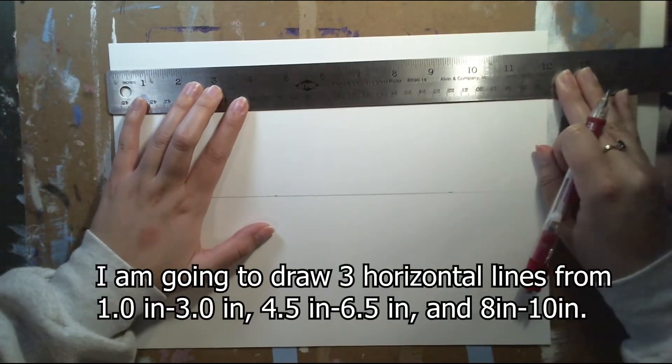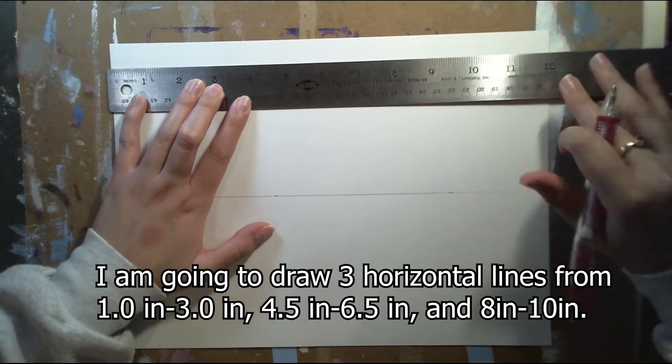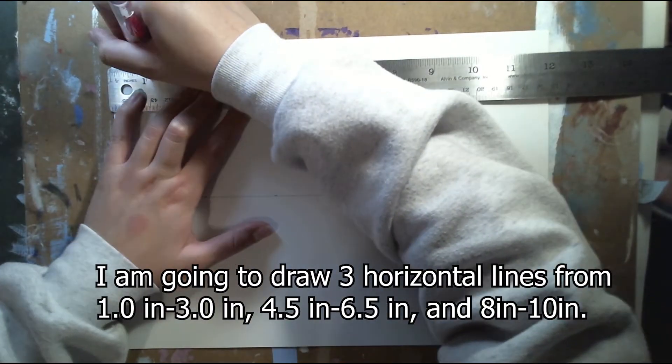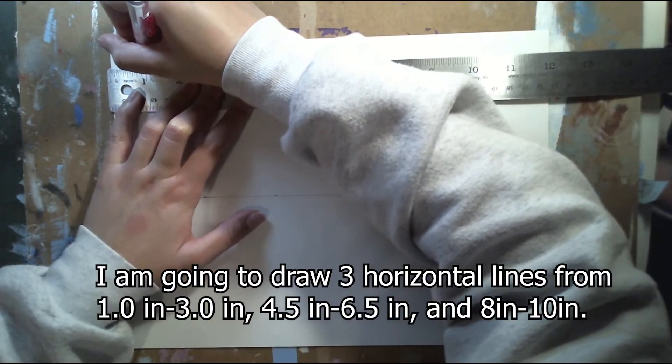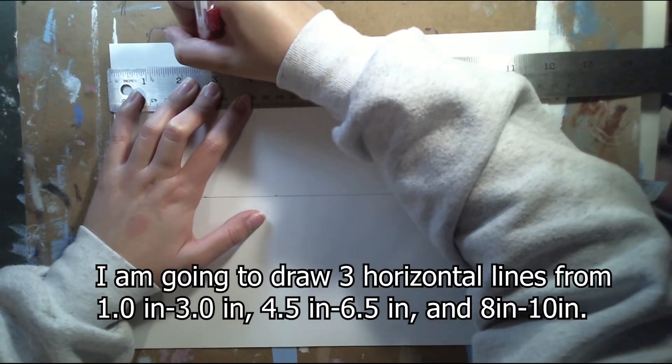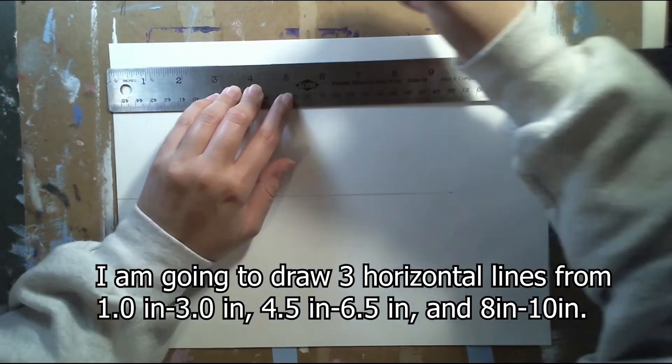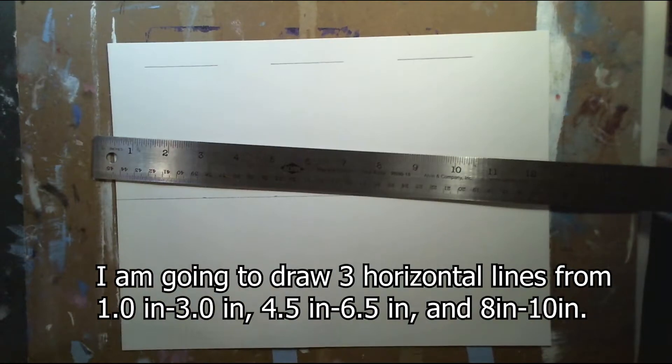Then my next step is I'm going to draw three horizontal lines from one inch to three inches, four and a half to six and a half inches, and eight to ten inches and these are gonna be my top and bottom of my boxes.